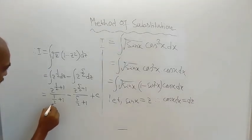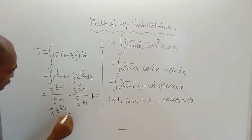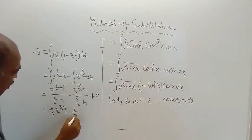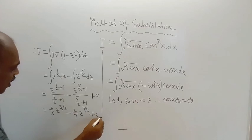What is the result? This is equal to 2 by 3, z to the power 3 by 2, minus 2 by 7, z to the power 7 by 2, plus c.